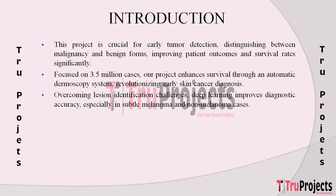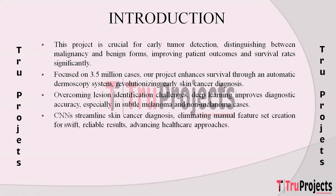UV rays contribute to skin cancer, and the project uses deep learning to provide an objective and reproducible method for visual assessment. This approach seeks to overcome challenges in visually identifying subtle differences, particularly in melanoma and non-melanoma lesions. The project leverages convolutional neural networks for efficient skin cancer diagnosis, eliminating manual feature set creation. CNNs excel in object detection and classification, ensuring a more objective and efficient process.